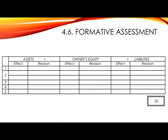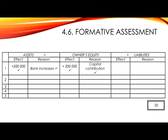Number 1. Owner introduced 200,000 Rand as capital into the business. The two accounts involved are Bank and Capital. Bank is an asset, and so in assets you will show plus 200,000 — tick — and your reason is that bank increases — tick. In owner's equity you will show plus 200,000 — tick — and your reason is capital increases or capital contribution — tick.